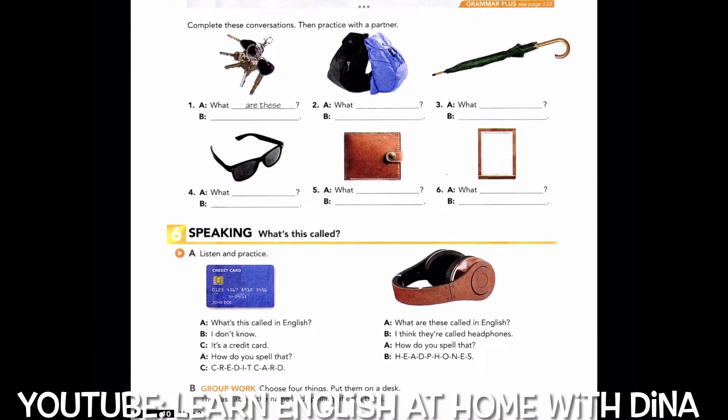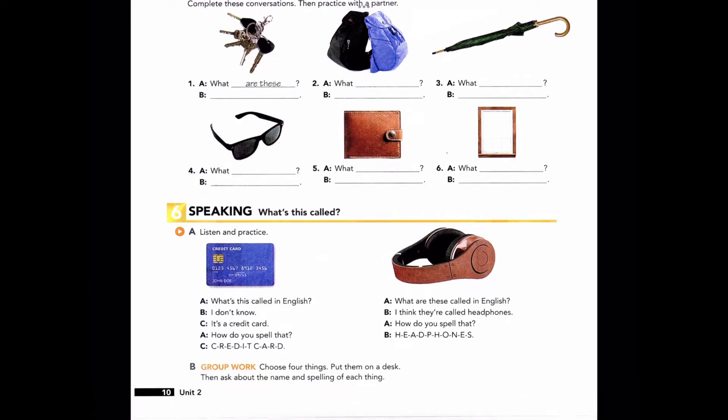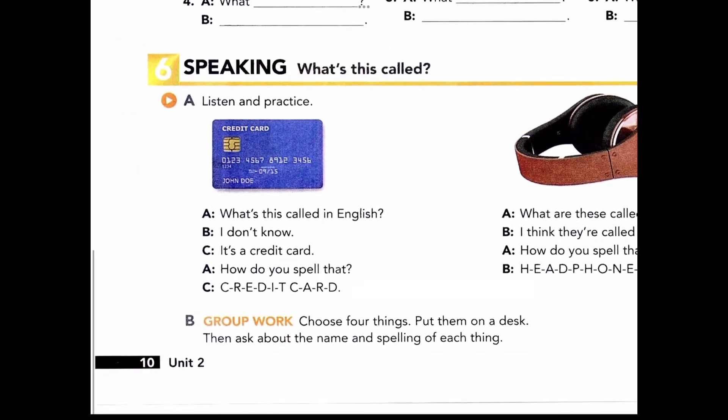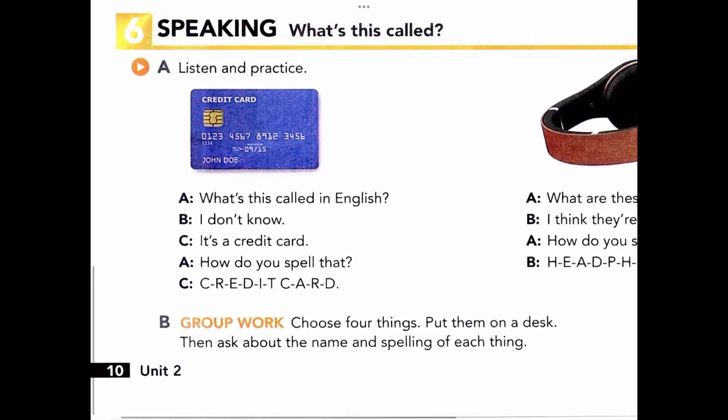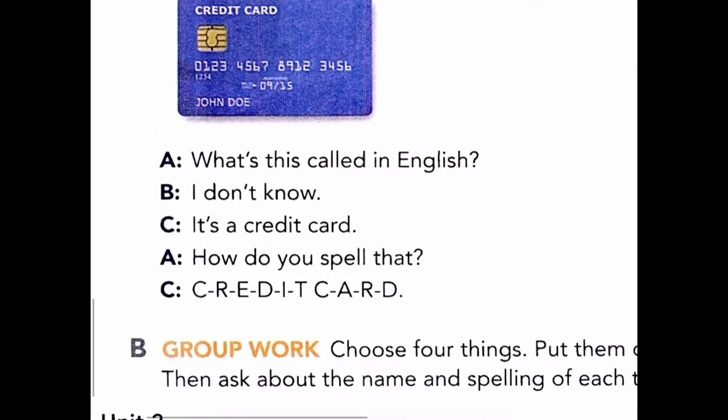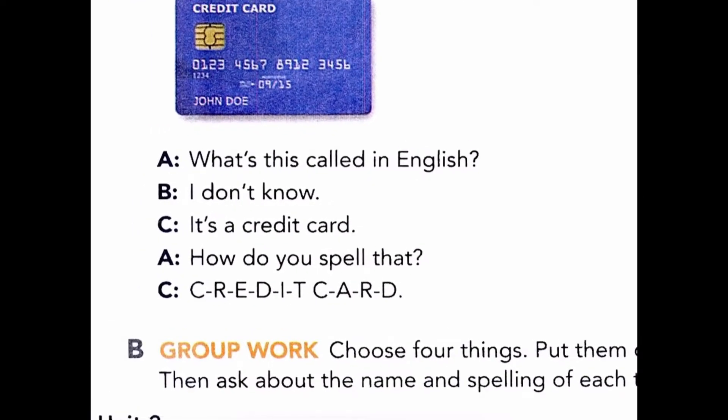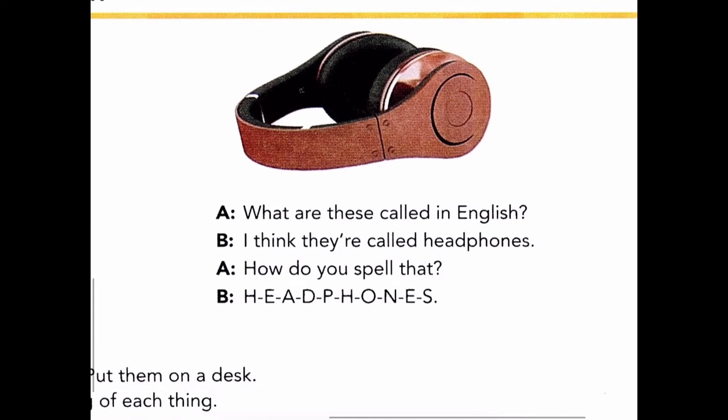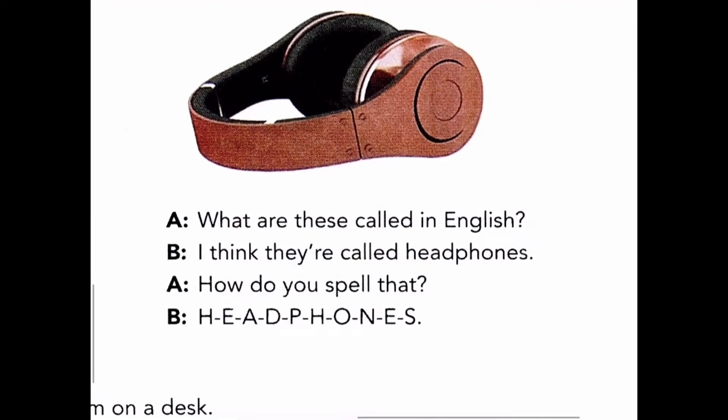Page 10, Exercise 6, Speaking: What's This Called? Part A: Listen and practice. What's this called in English? I don't know. It's a credit card. How do you spell that? C-R-E-D-I-T C-A-R-D. What are these called in English? I think they're called headphones. How do you spell that? H-E-A-D-P-H-O-N-E-S.